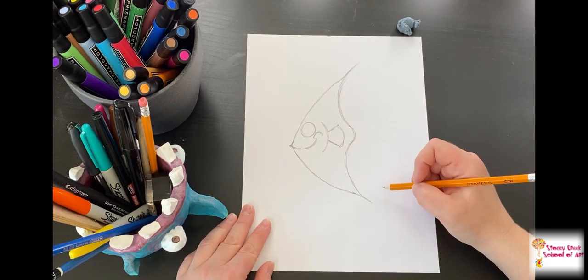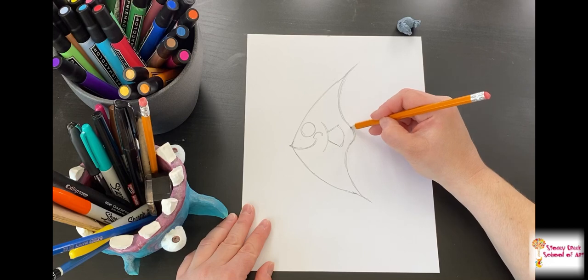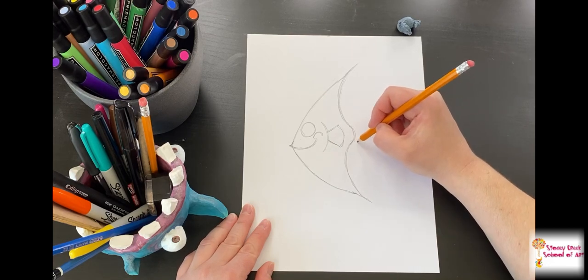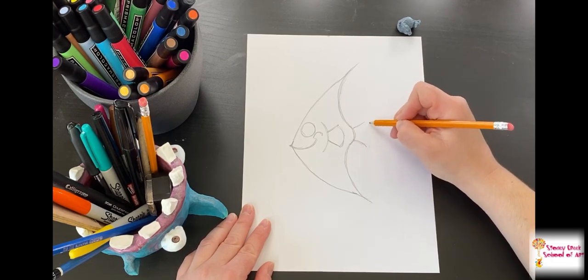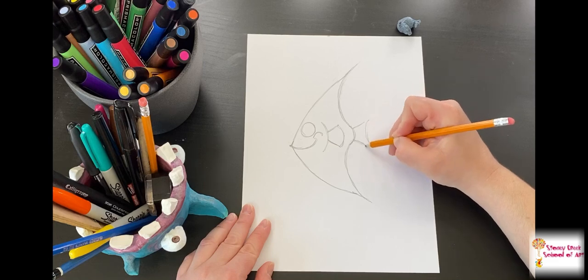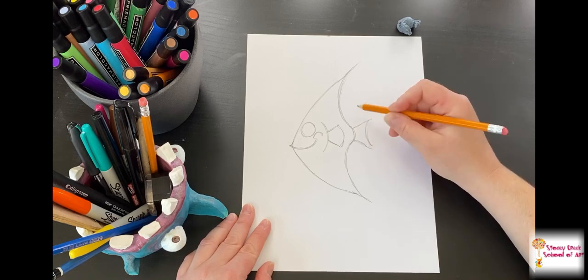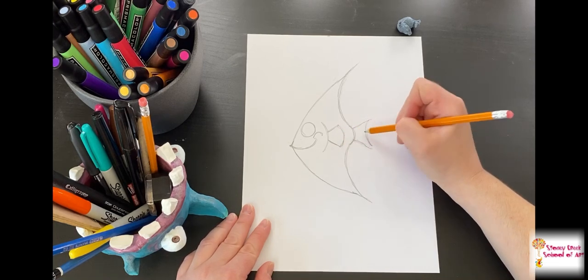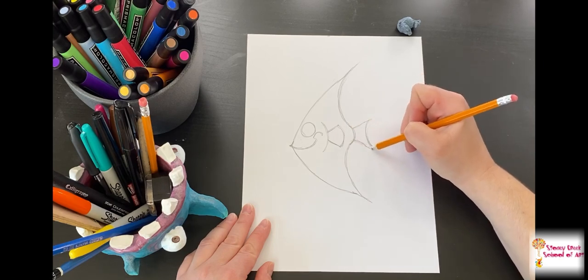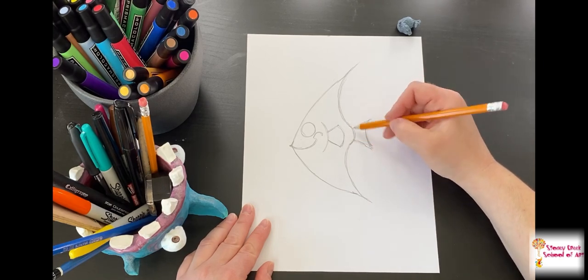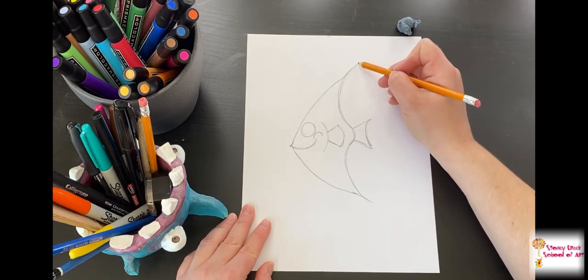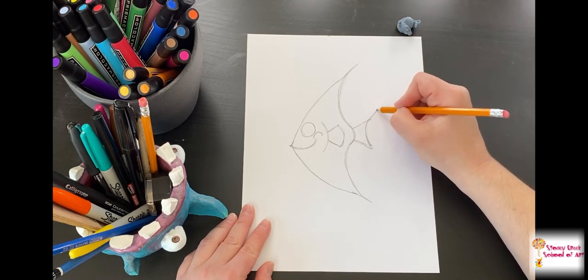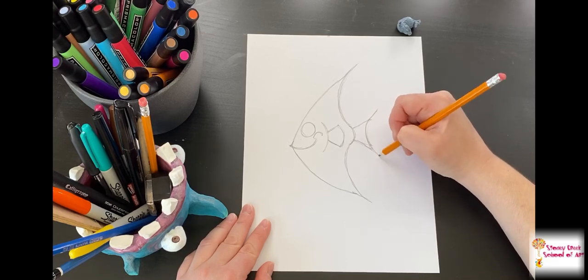On this end, we're going to do the tail fin. I'm going to go out and out and join it together with a reverse curve. Normally we've been doing curve out, curve out, but I'm going to do it inside like that. I want the tips of his fins to mimic what's happening up here. I'm just going to layer that out.